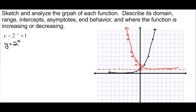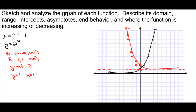Describe its domain: you can raise 2 to anything, so the domain is negative infinity to infinity. The range, however, is 1 to infinity — we use a parenthesis instead of a bracket because it will never actually equal 1. Intercepts: we have a y-intercept of 2. Asymptotes: y equals 1 is a horizontal asymptote.